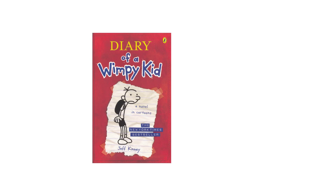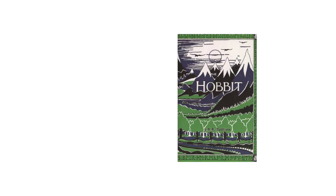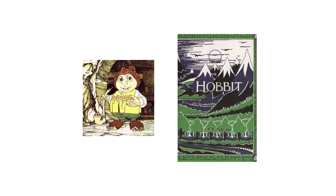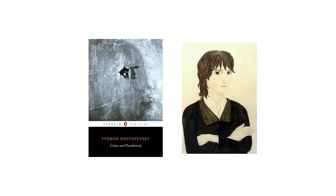The subject of Diary of a Wimpy Kid is the wimpy kid Greg Heffley. The subject of The Hobbit is a hobbit called Bilbo Baggins. The subject of Crime and Punishment is a psychopathic murderer called Rodion Romanovich.